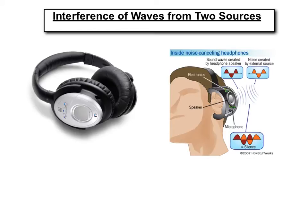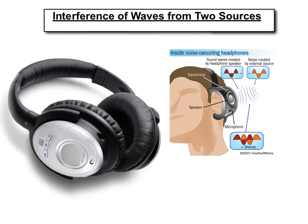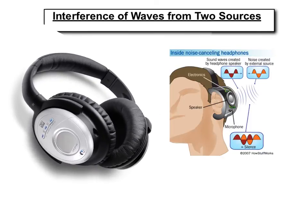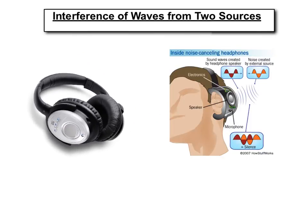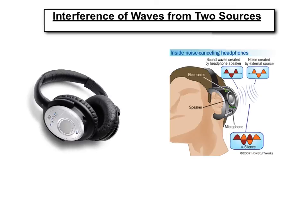Perhaps you have seen or even have a pair of headphones such as these that offer active noise reduction. When you turn these headphones on, they produce sound that somehow cancels the noise from the external environment. So the question is, how does adding sound to a system make it quieter? This is one of the questions we're going to answer in this video, in which we look at the interference of waves from two sources.